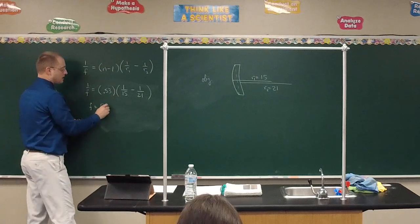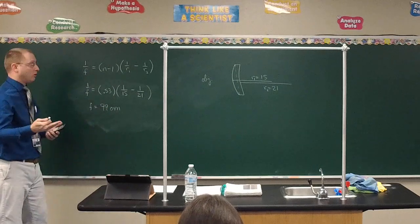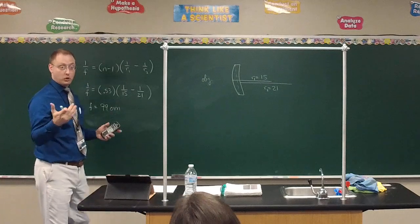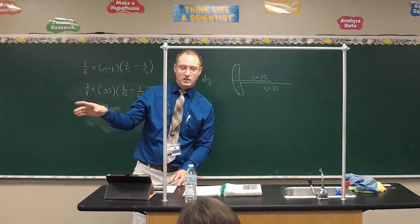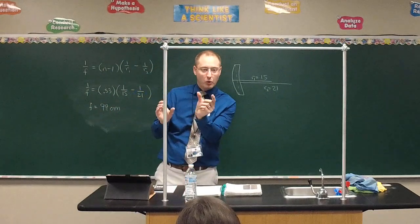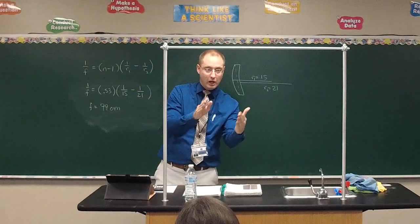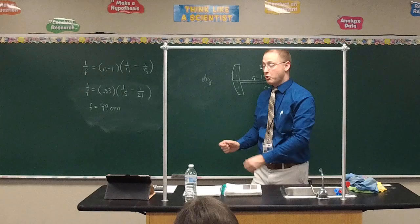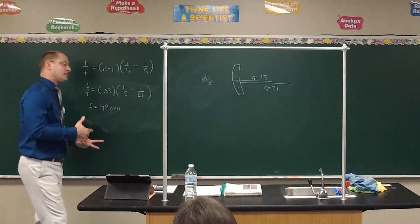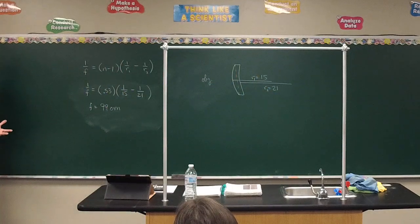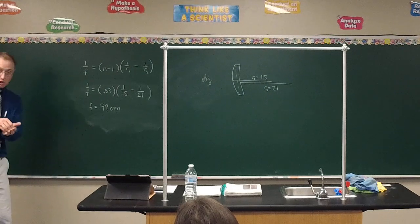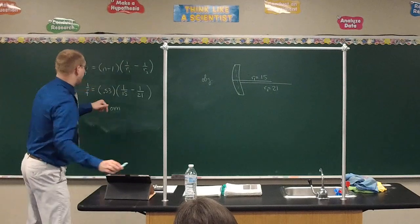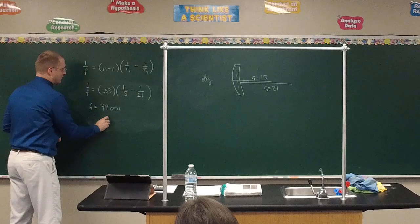So: one over f equals 0.53 times the quantity one over 15 minus one over 21. We take the reciprocal, subtract, multiply by 0.53, and take the reciprocal again. The focal length comes out to approximately 99 centimeters — almost one full meter. That's a pretty long, weak focal length compared to the lenses we were using to ignite things, which were only this far. A positive focal length means it is indeed a converging lens.